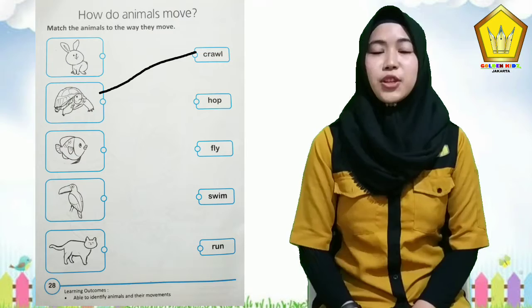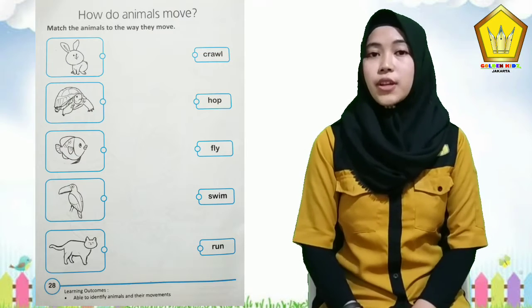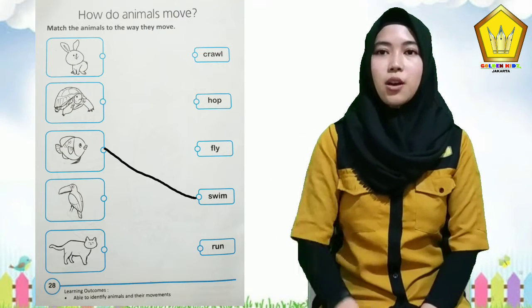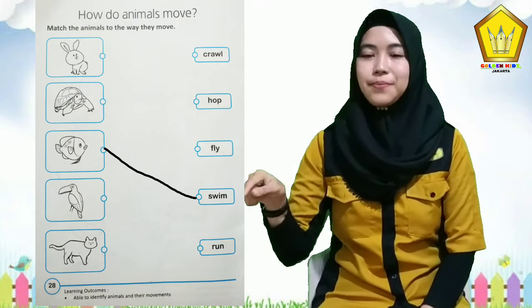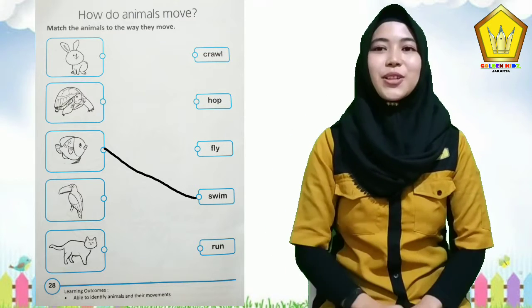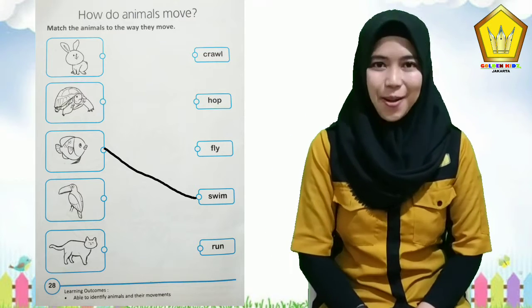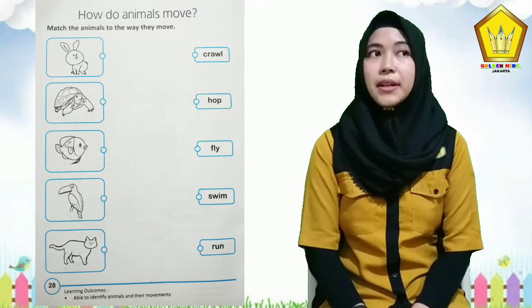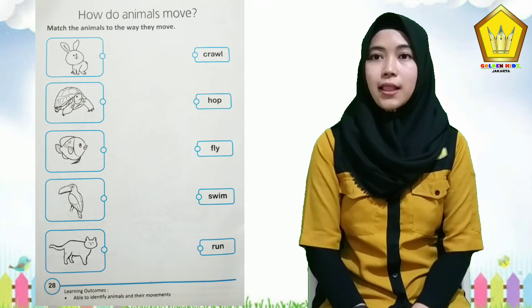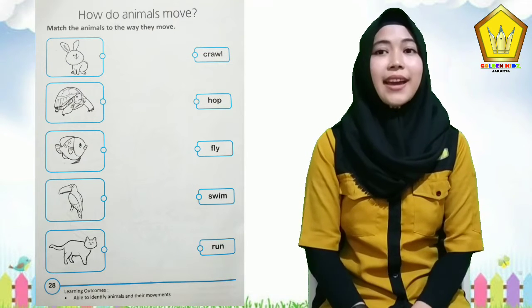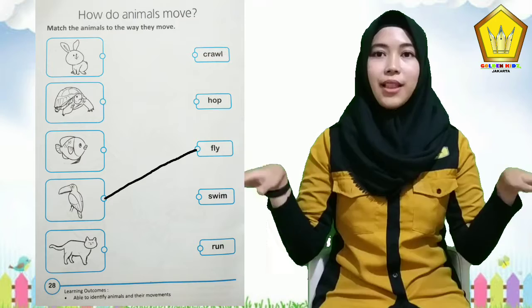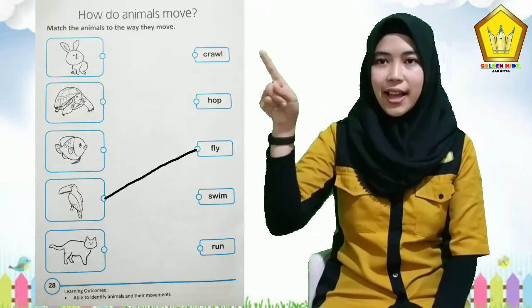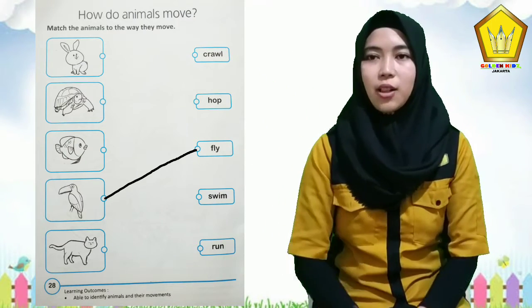And after that, fish — fish moves with swim, so make a line to swim, s-w-i-m. And then bird — bird moves with what? Yes, with flying, so make a line to fly, f-l-y, fly.